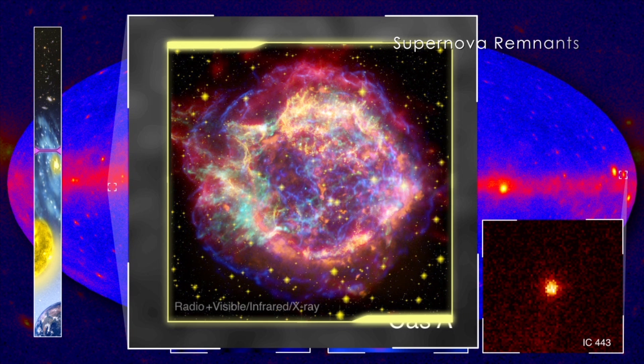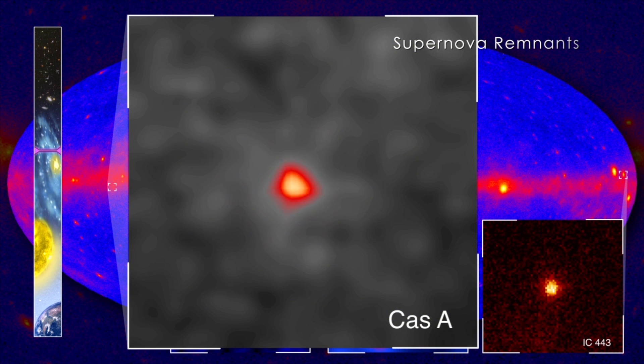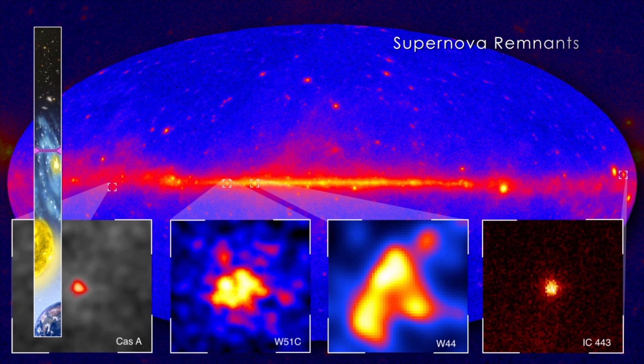New images show where supernova remnants emit gamma rays a billion times more energetic than visible light. This glow suggests that the remnants are a source of cosmic rays, protons and electrons accelerated to near light speed.